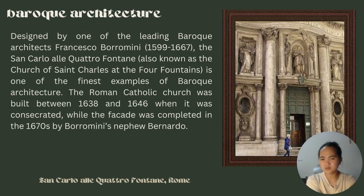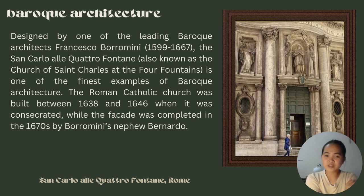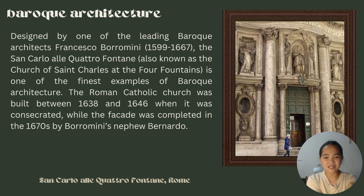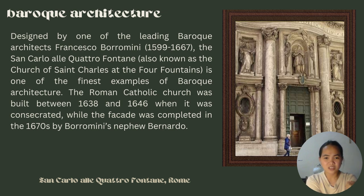San Carlo alle Quattro Fontane, designed by leading baroque architect Francesco Borromini, is also known as the Church of Saint Charles at the Four Fountains and is one of the finest examples of baroque architecture. This Roman Catholic church was built between 1638 and 1646 when it was consecrated, while the façade was completed in the 1670s by Borromini's nephew Bernardo.